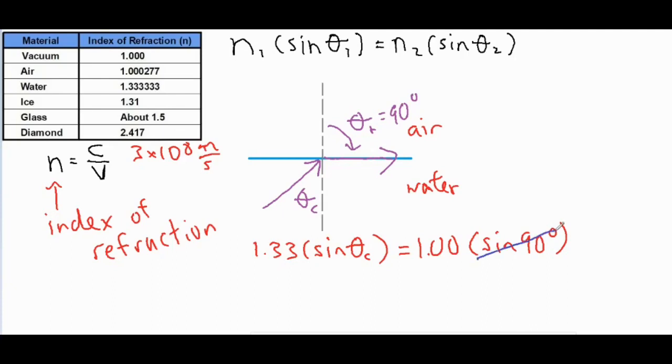Now if you work that out mathematically, sine of 90 degrees is equal to one, so we can go ahead and cross that out. And then we would take that 1.33 and slide it over here so that we can cancel it on the left side. And then basically how you get your final angle is you always take the inverse sine of the refracted index of refraction divided by the incident index of refraction.